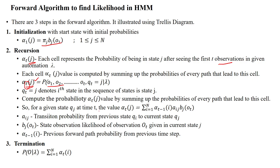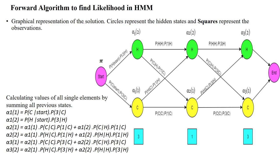The graphical representation of the solution is given here. Circles represent the states and squares represent the observations. These are the observations for three days. The initial state is indicated with pi. We don't know the state sequence, so we have to consider both states on day number one. For day number one, it may be hot or maybe cold — we have to consider both. For both states, we identify the probability of hot and the probability of cold, and whichever is the maximum probability value will be considered the hidden state.